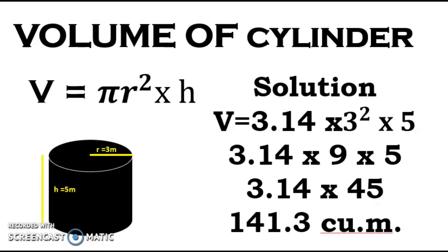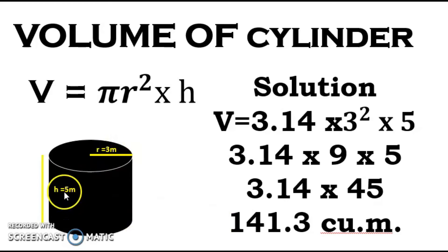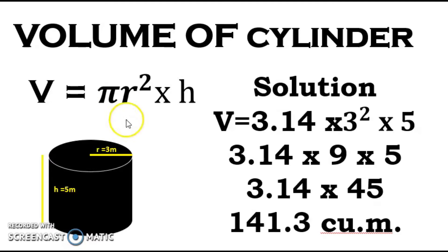The first one is the volume of the cylinder. In solving for the volume of a cylinder, we have V equals pi times r squared times height. The given radius is 3 meters and the height is 5 meters.